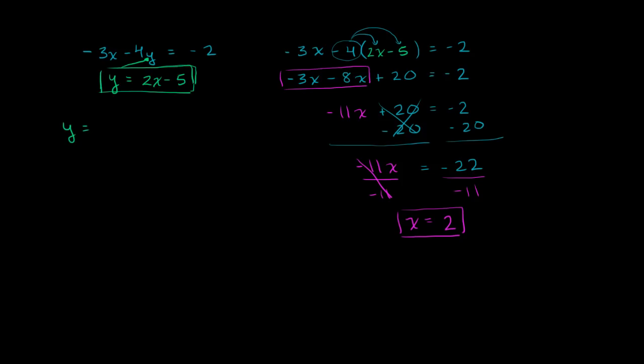So it says y is equal to 2 times, and instead of x, we now know that the x value where these two intersect, you could view it that way, is going to be equal to 2. So 2 times 2 minus 5. Let's figure out the corresponding y value, minus 5.